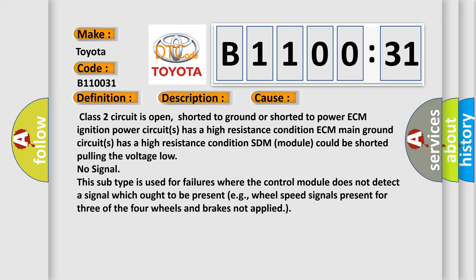This subtype is used for failures where the control module does not detect a signal which ought to be present, e.g., wheel speed signal.